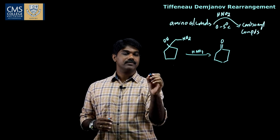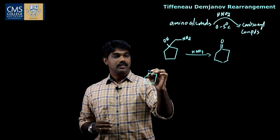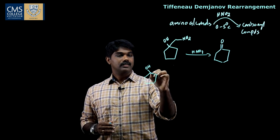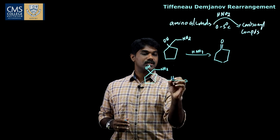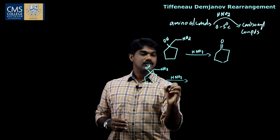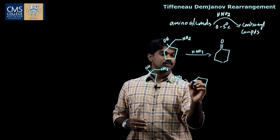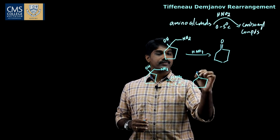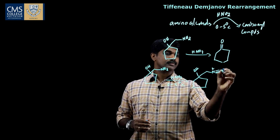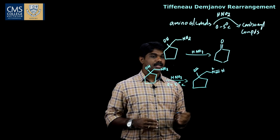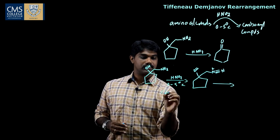Let us see the mechanism. In the first step of the Demjanov rearrangement reaction, this NH2 group gets diazotized. HNO2 at 0 to 5 degrees Celsius reacts with the NH2 group and we get the diazonium salt. This is the diazotization step.